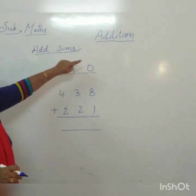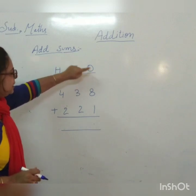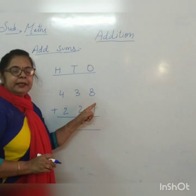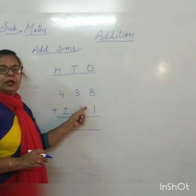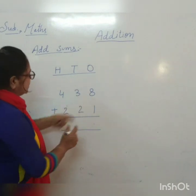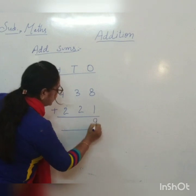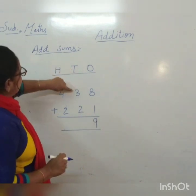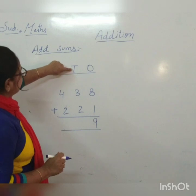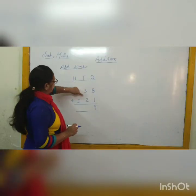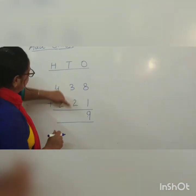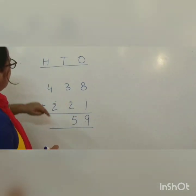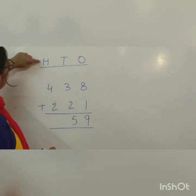We have to start from the ones place. Keep the large number in your mind and then add the small number. 8 plus 1 is 9. Now come to the tens place. 3 is the big number plus 2. 3 plus 2 equals 5.